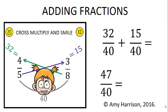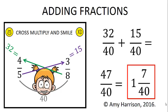47 over 40 is an improper fraction, so we could change that to a mixed number by seeing that 40 goes into 47 one time with 7 left over, or 1 and 7 fortieths.